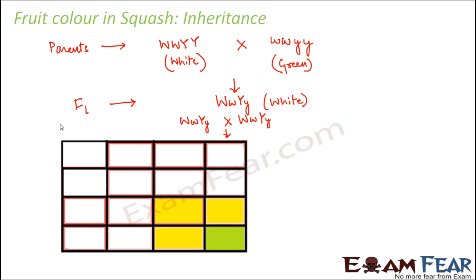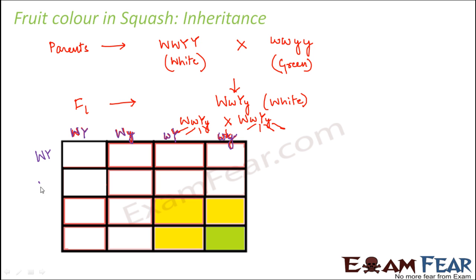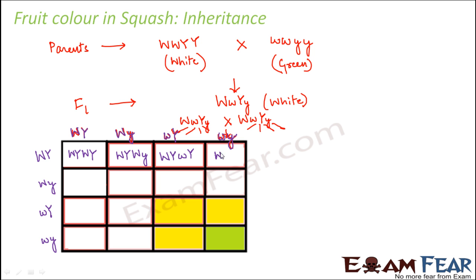To get the F2 generation, there are four possible gametes from each parent: capital W capital Y, capital W small y, small w capital Y, and small w small y. Crossing these in a 4×4 Punnett square gives 16 genotype combinations. We then determine the phenotype of each of the 16 boxes based on whether a dominant W is present and what the Y genotype is.